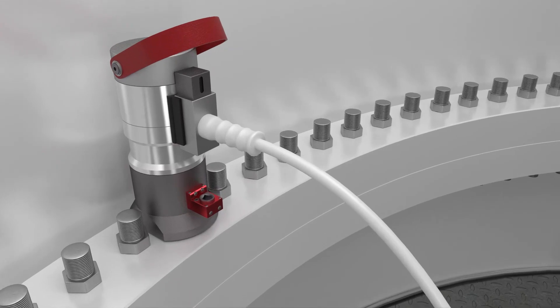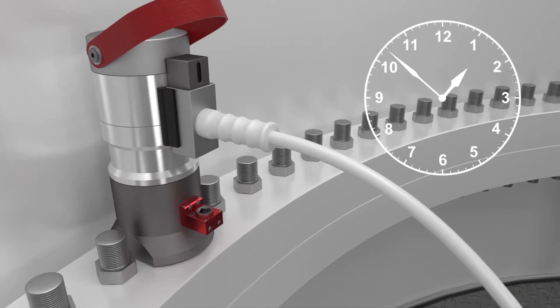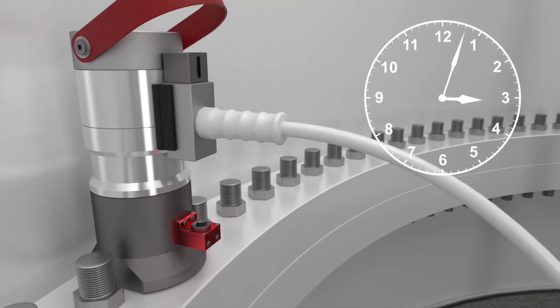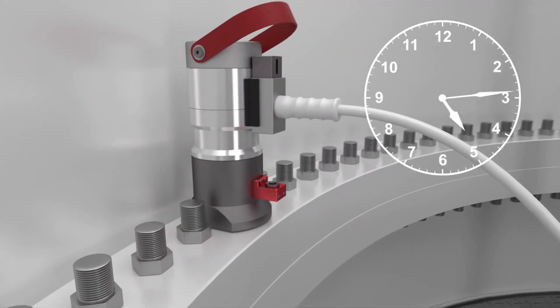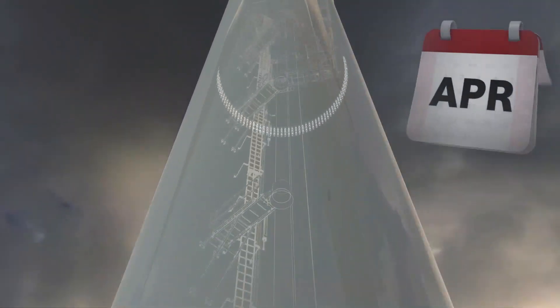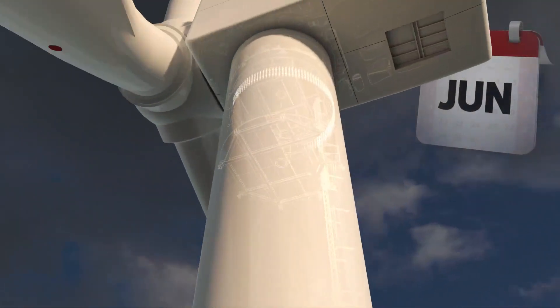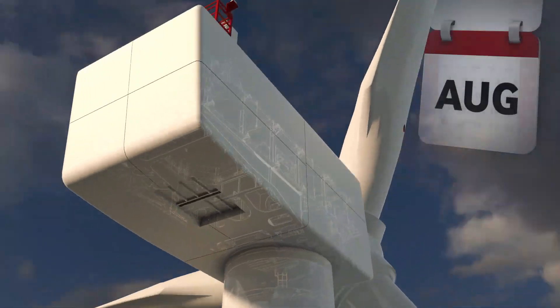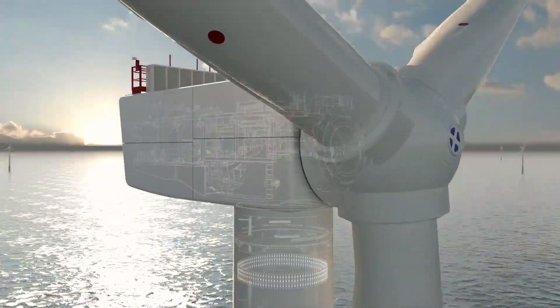Currently, offshore wind turbine bolts are periodically check tightened with heavy high-pressure hydraulic tooling to ensure they haven't begun to relax. Check tightening is the biggest scheduled maintenance task for wind turbine operators, incurring significant costs and turbine downtime.